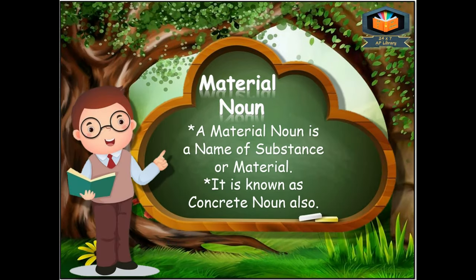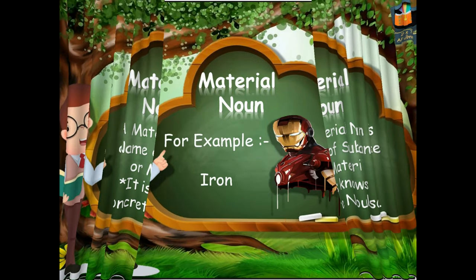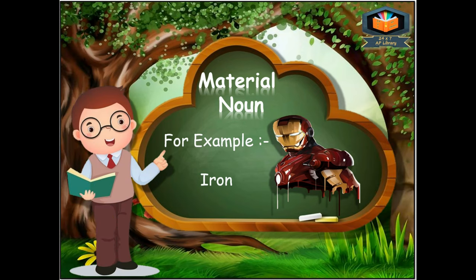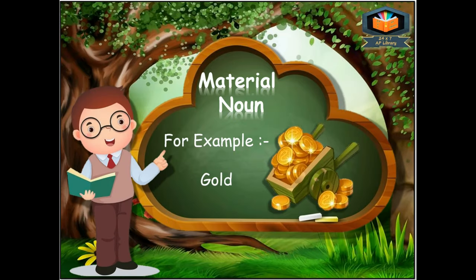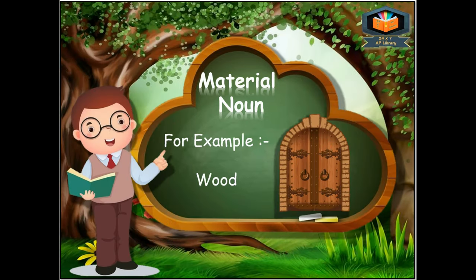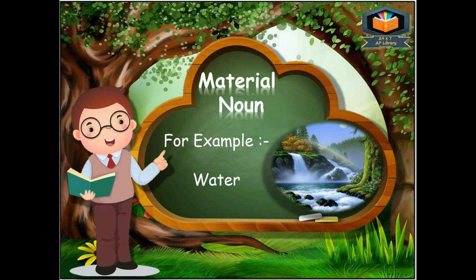The fourth kind is material noun. A material noun is the name of a substance or material — it is also known as a concrete noun; material noun and concrete noun are the same. For example: iron is the name of a metal; gold is also the name of a metal; wood is the name of a material; water is the name of a substance.